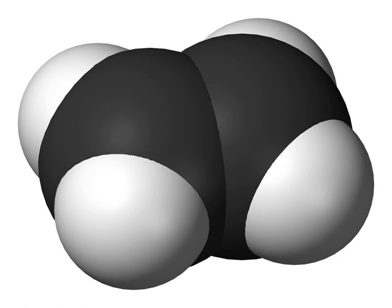The simplest alkene, ethylene C2H4, with the International Union of Pure and Applied Chemistry IUPAC name ethene, is the organic compound produced on the largest scale industrially.